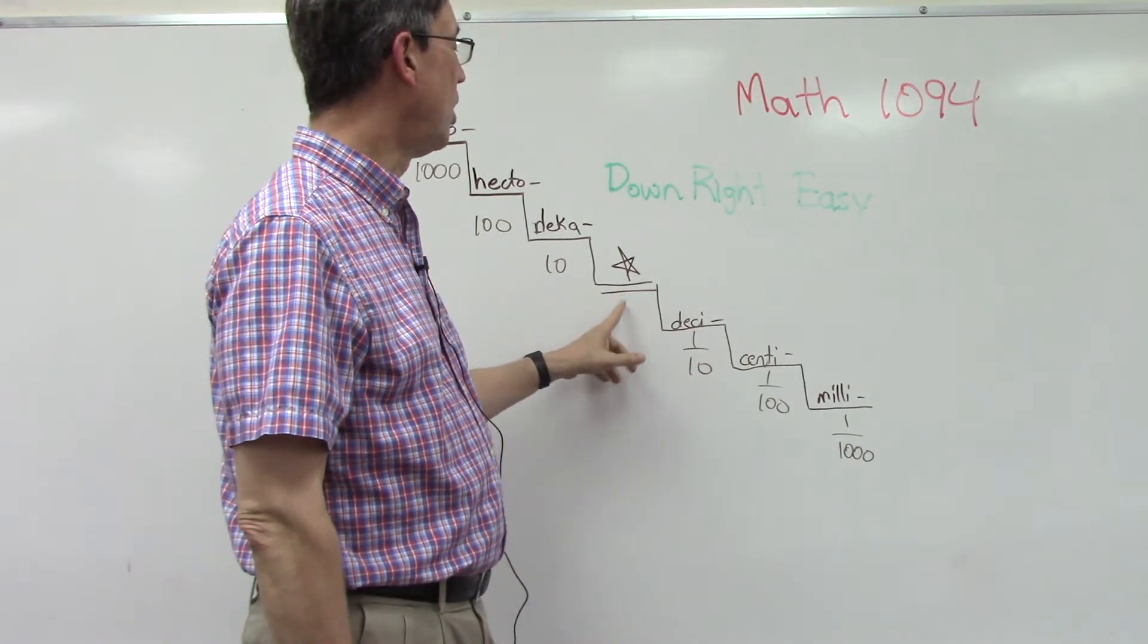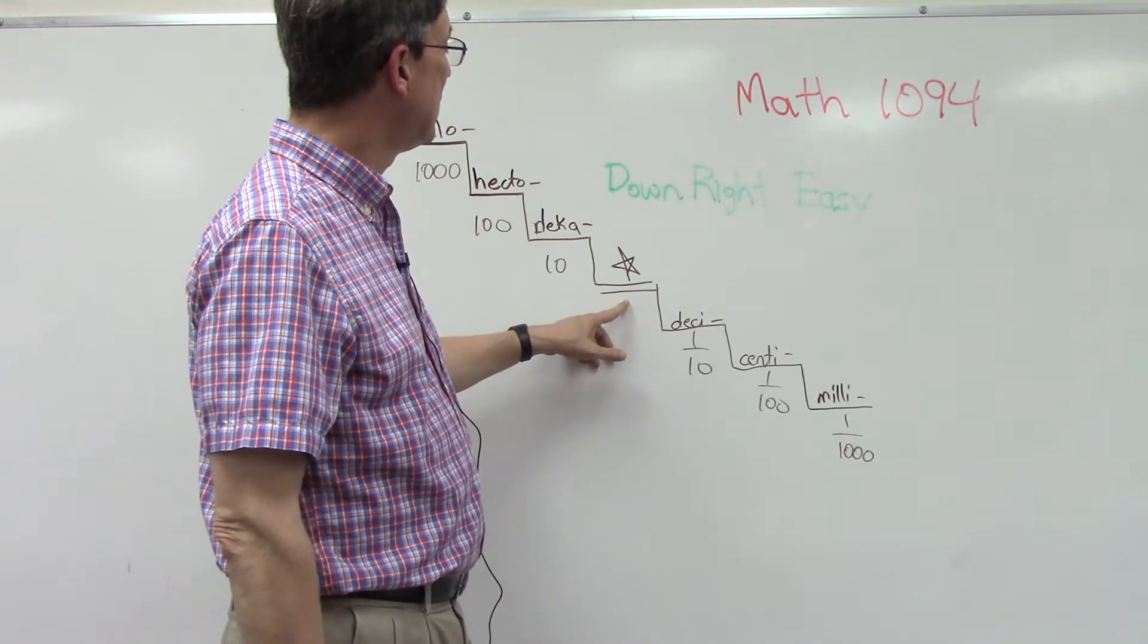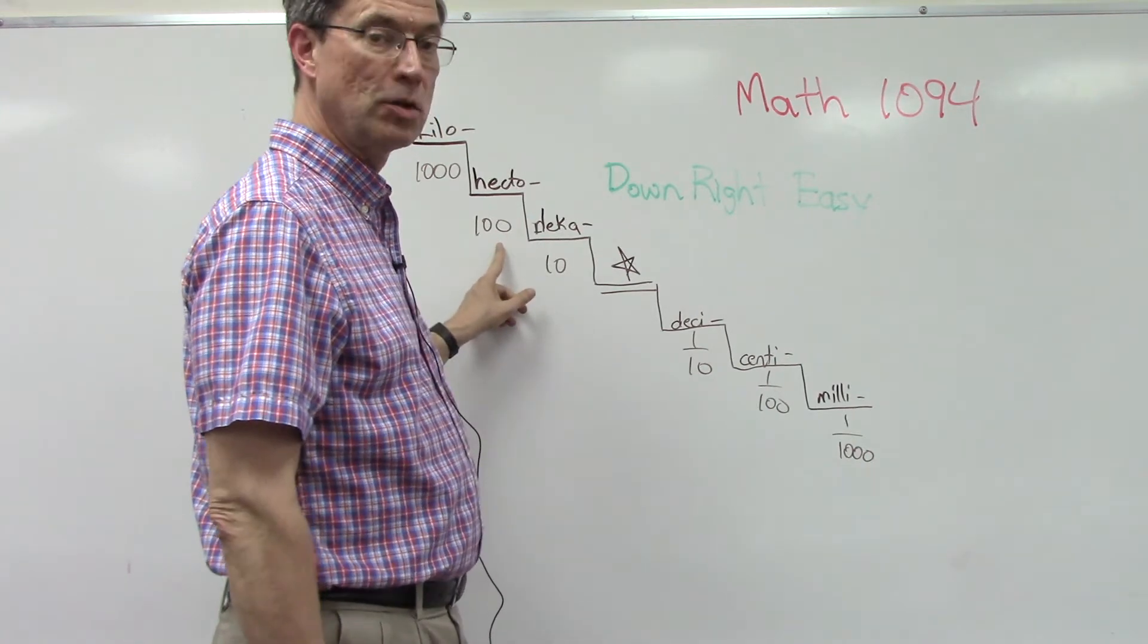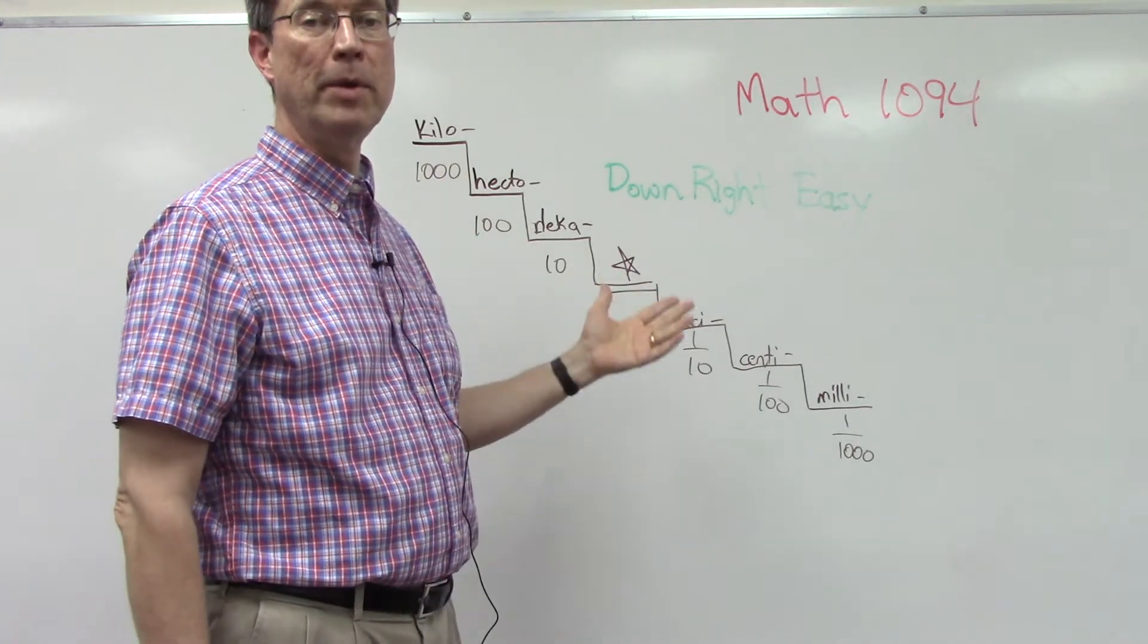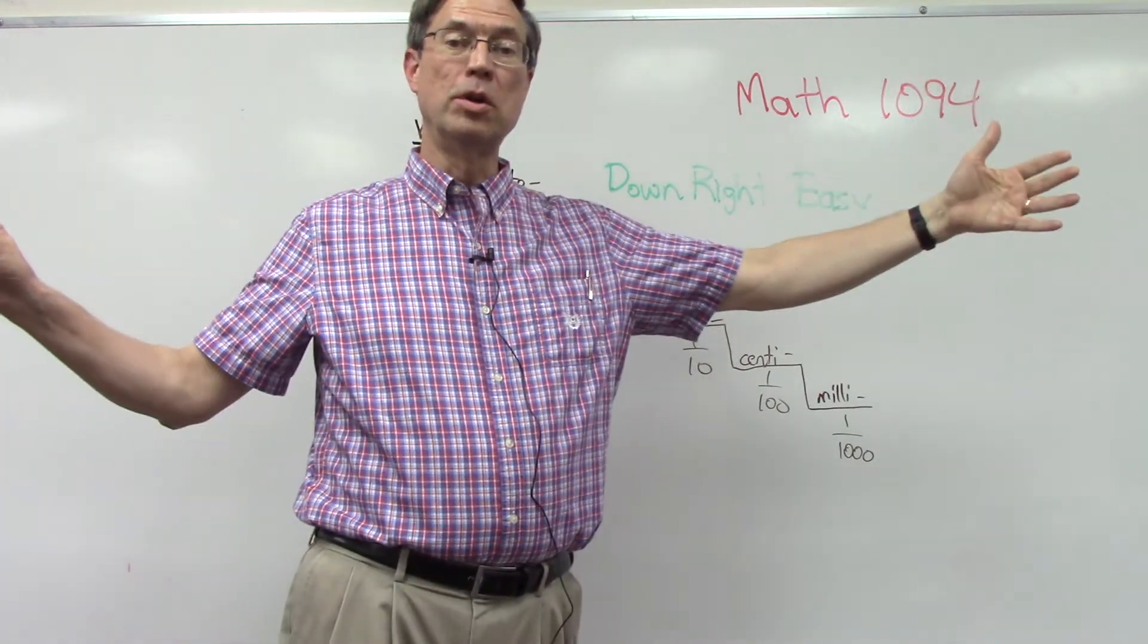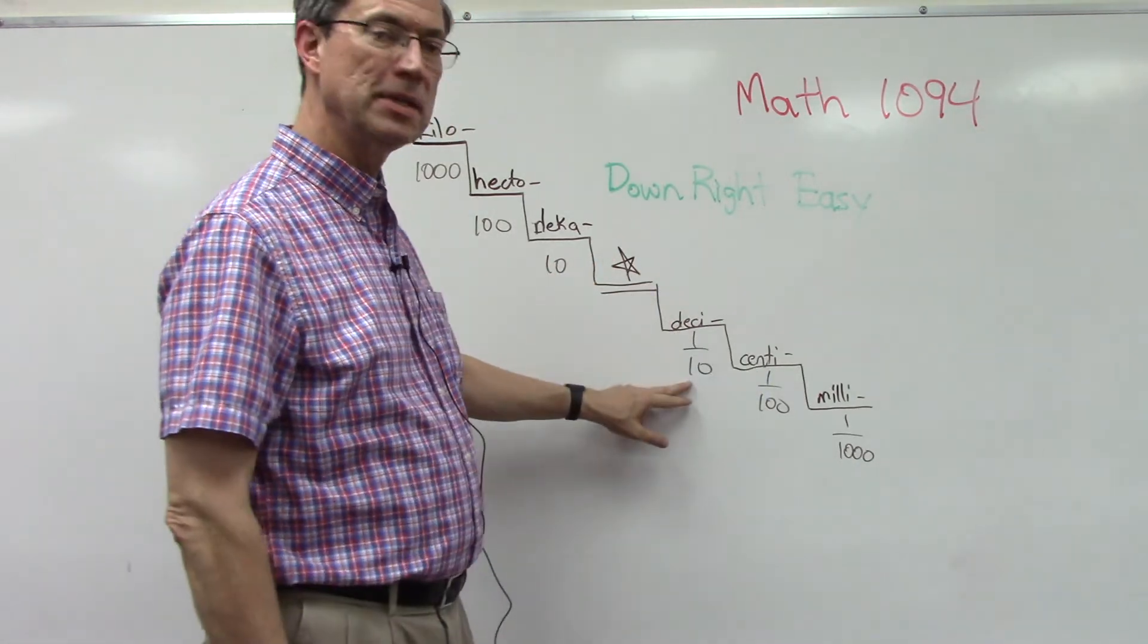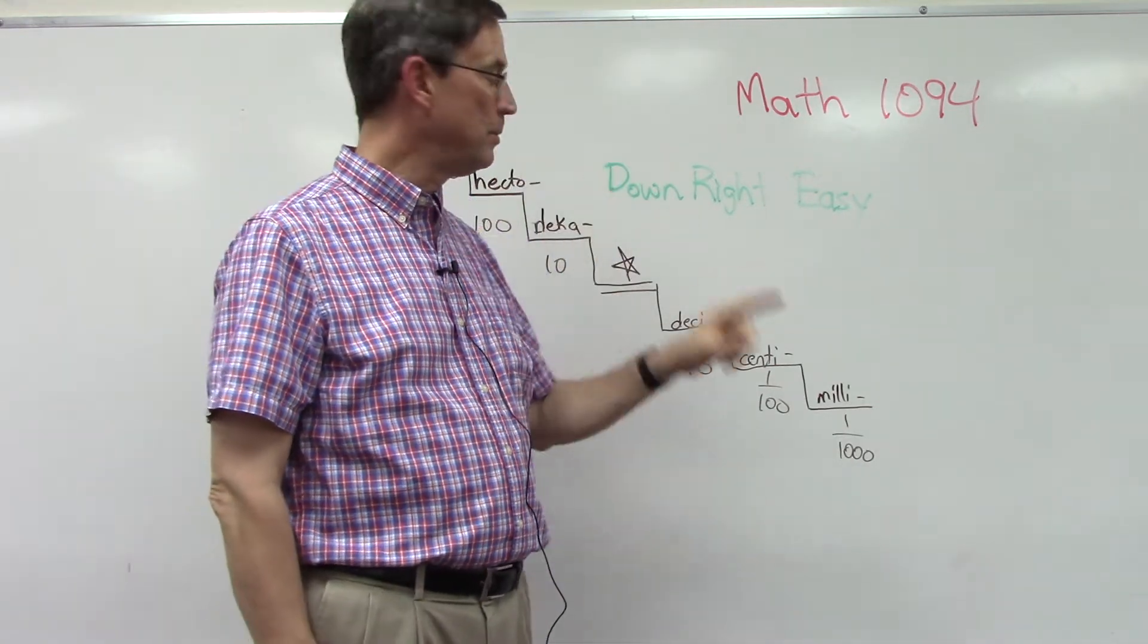We could put something here like meters or liters. Liters are what we use for measuring volume, meters is length. If we had 10 meters, that would be a decameter. 100 meters is a hectometer. And then the one you've probably heard the most is a kilometer—that would be a thousand meters. If we take one meter and divide it into 10 equal parts, that would be a decimeter.